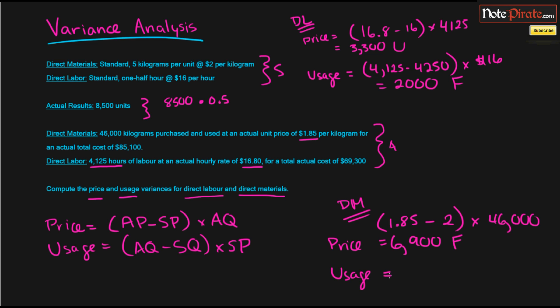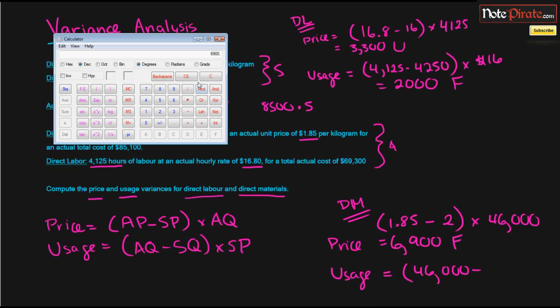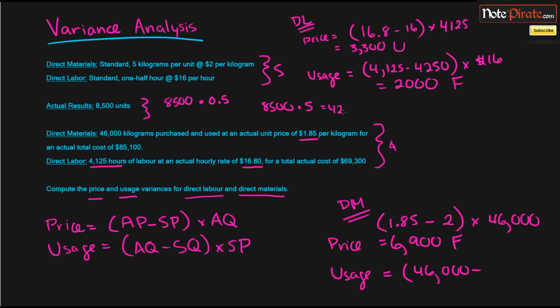And our usage variance is going to be represented by actual quantities which are 46,000 minus 5 kilograms per unit. And you just get that by multiplying the budgeted amount by the actual quantity which are 8,500 times 5, which is going to be 42,500. Sub that in there, and we multiply it by the standard price,